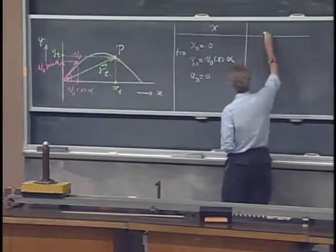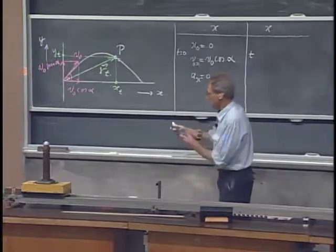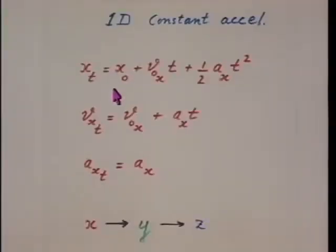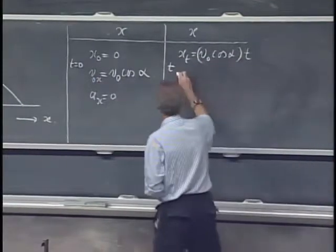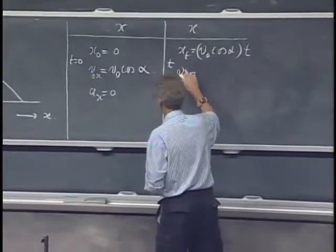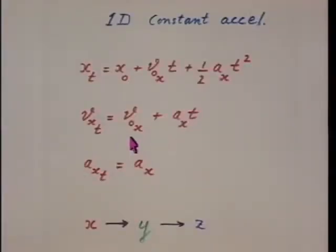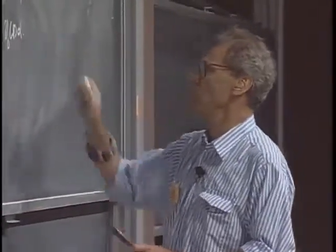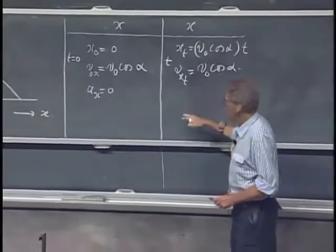Now I want to do the same in the x direction for time t. Well, at time t, I look there at the first equation. x zero is zero. I know v zero x. That is v zero cosine alpha. So x of t is v zero cosine alpha times t. But there is no acceleration, so that's it. What is v x of t? The velocity in the x direction at any moment in time. That is that equation. That is simply v zero x. It is not changing in time because there is no acceleration. So the initial velocity at t zero is the same as t seconds later. And the acceleration is zero.